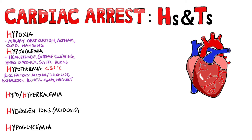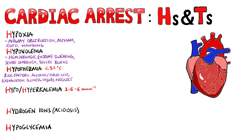Then we have hyper- or hypokalemia. The normal range for potassium may change between different labs, but usually it is between 3.5 and 5 millimoles per litre. The commonest causes of hyperkalemia include renal failure and drugs such as ACE inhibitors, angiotensin-2 receptor blockers, and potassium-sparing diuretics.